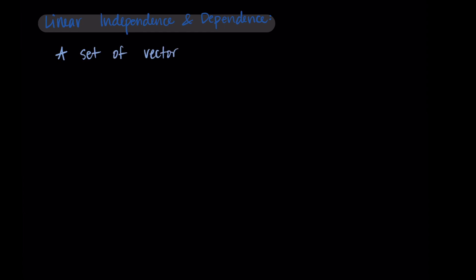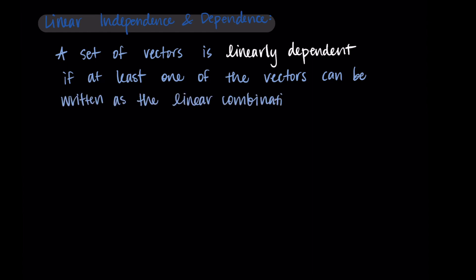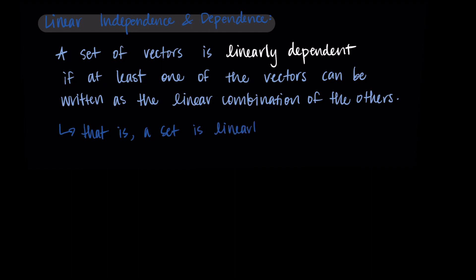Now we're going to talk about linear independence and dependence and see how it's related to the similar wording for the types of systems. So let's do some definitions first. We say that a set of vectors is linearly dependent if at least one of the vectors can be written as the linear combination of the others. So a set is linearly dependent if one vector in the set is in the span of the others.